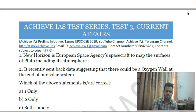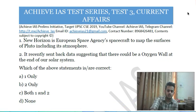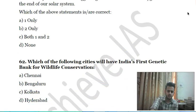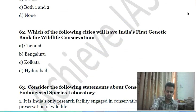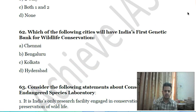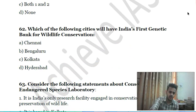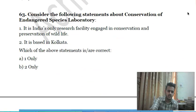Sixtieth question: consider the following statements — first, New Horizons is a European Space Agency program to map the surfaces of Pluto including its atmosphere; second, it recently sent back data suggesting there could be a hydrogen wall at the edge of the solar system. Choose the correct answer. Sixty-first question: which of the following cities will have India's first genetic bank for wildlife conservation? A) Chennai, B) Bangalore, C) Kolkata, D) Hyderabad.